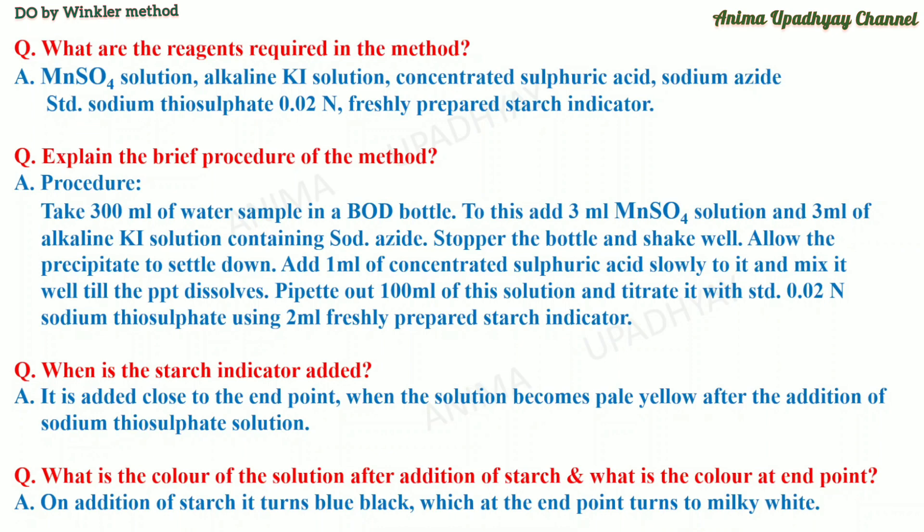Explain the brief procedure of the method. Take 300 ml of water sample in a BOD bottle. To this, add 3 ml manganese sulfate solution and 3 ml alkaline potassium iodide solution containing sodium azide. Stopper the bottle and shake it well. Allow the precipitate to settle down. Then add 1 ml of concentrated sulfuric acid slowly and mix it well till the precipitate dissolves completely.